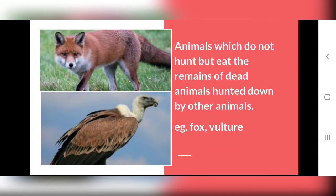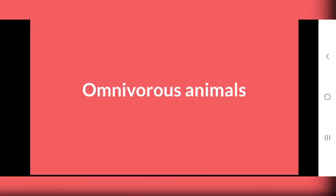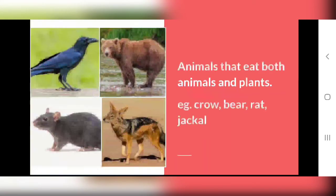These are also Carnivorous Animals. The third group is Omnivorous Animals. Omnivorous means both. So these animals eat both things — both plants and animals. Omnivorous animals are animals that eat both plant parts and animal food — whatever they get, they eat both.